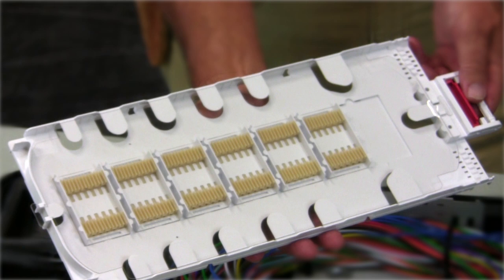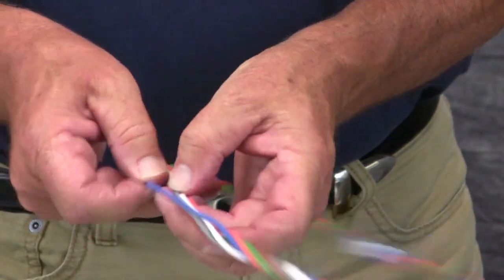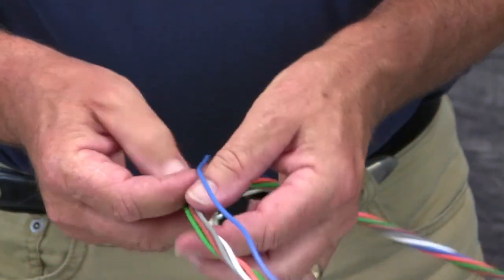Fiber splicing should be done in compliance with your company's approved practices. To install the slack in the baskets, first separate the buffer tubes to be spliced from the expressed buffer tubes.